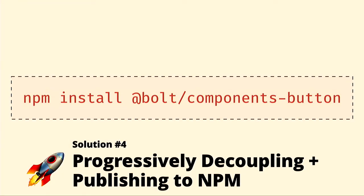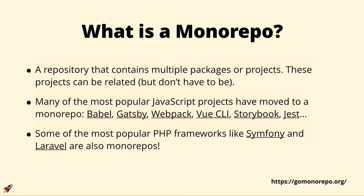We need to rethink how we're publishing our components and integrating into Drupal — the old way is broken. Monorepos are essentially a repository of different components, packages, and libraries that are all related, living in just one code base. Some of the most popular JavaScript libraries — Babel, Gatsby, Vue CLI, Storybook — are actually using monorepos. And bigger players in the PHP world, like Symfony and Laravel, are using the same monorepo idea with different tools to split out separate pieces.